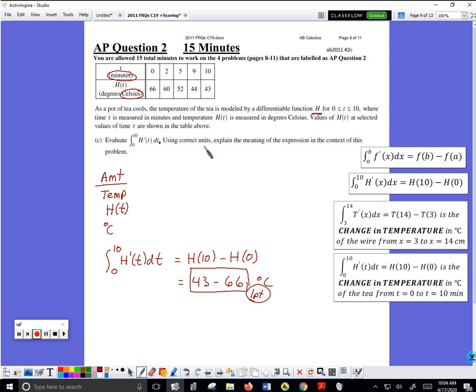Using correct units, explain the meaning of the expression. Well, this is the temperature at 10 minutes, this is the temperature at 0 minutes. You can use your calculator here. So what you want to write is from T equals 0 to T equals 10 minutes. Got to have the word minutes. Without the word minutes, you don't get the point.